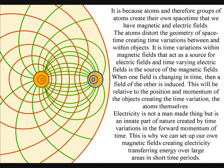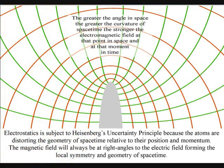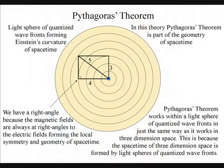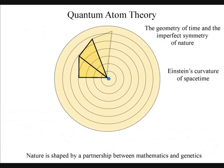It is time variations within magnetic fields that act as a source for electric fields, and time-varying electric fields induce magnetic fields. When one field is changing in time, then a field of the other is induced. This will be relative to the position and momentum of the objects creating the time variation, the atoms themselves. The magnetic fields are always at right angles to the electric fields, forming a local space-time symmetry and geometry.